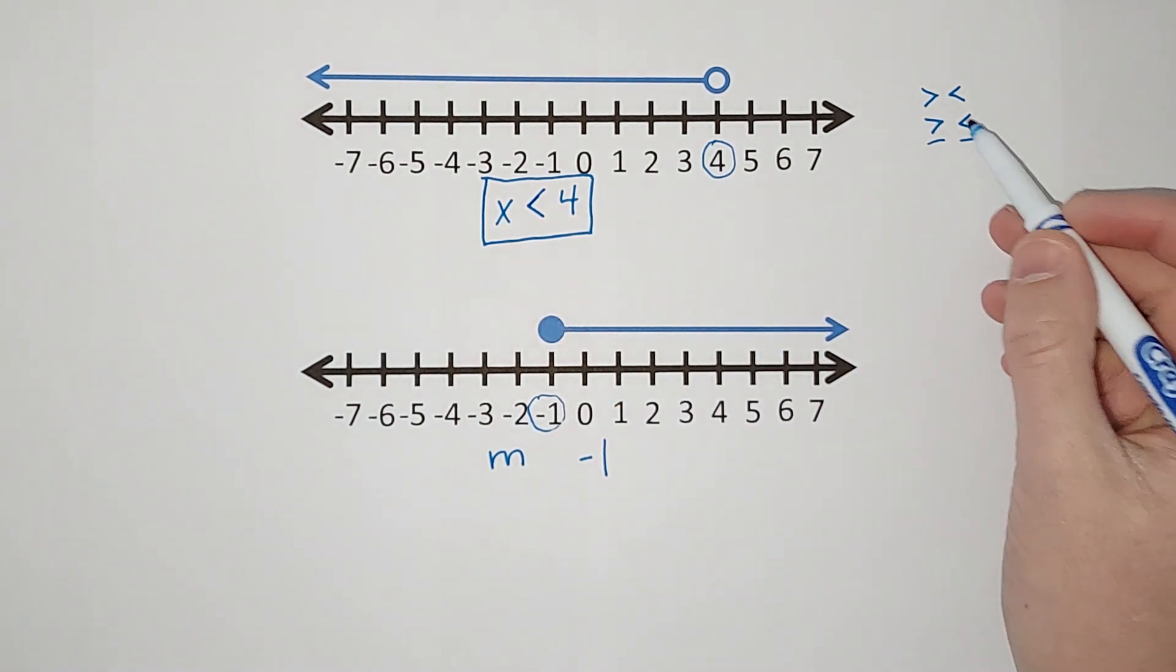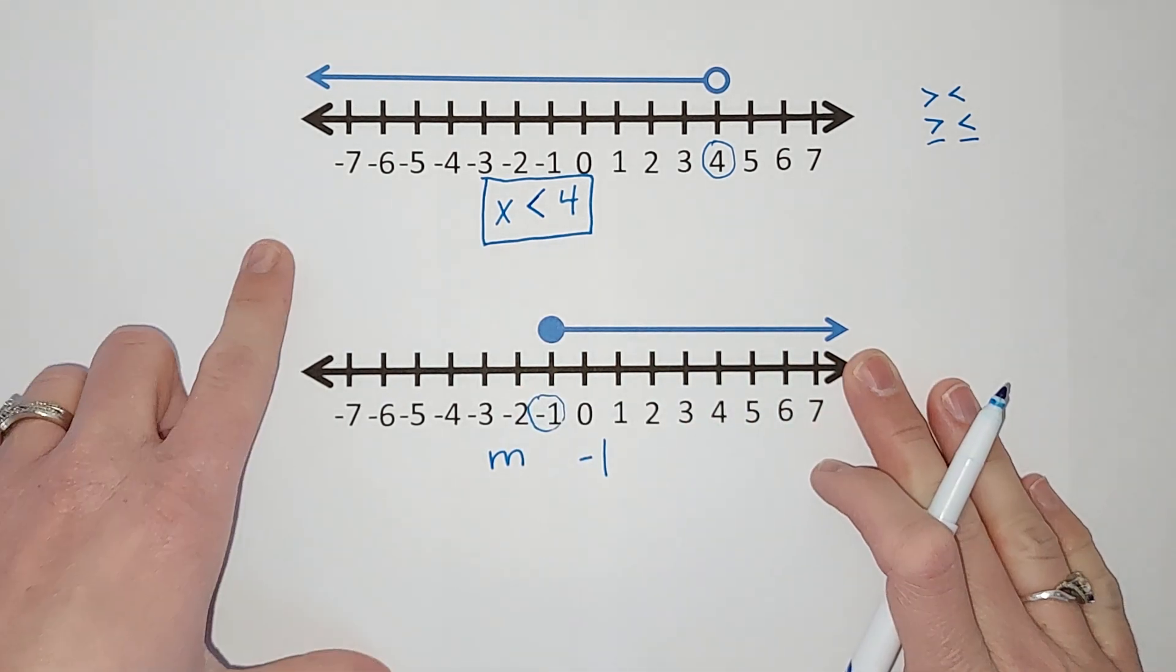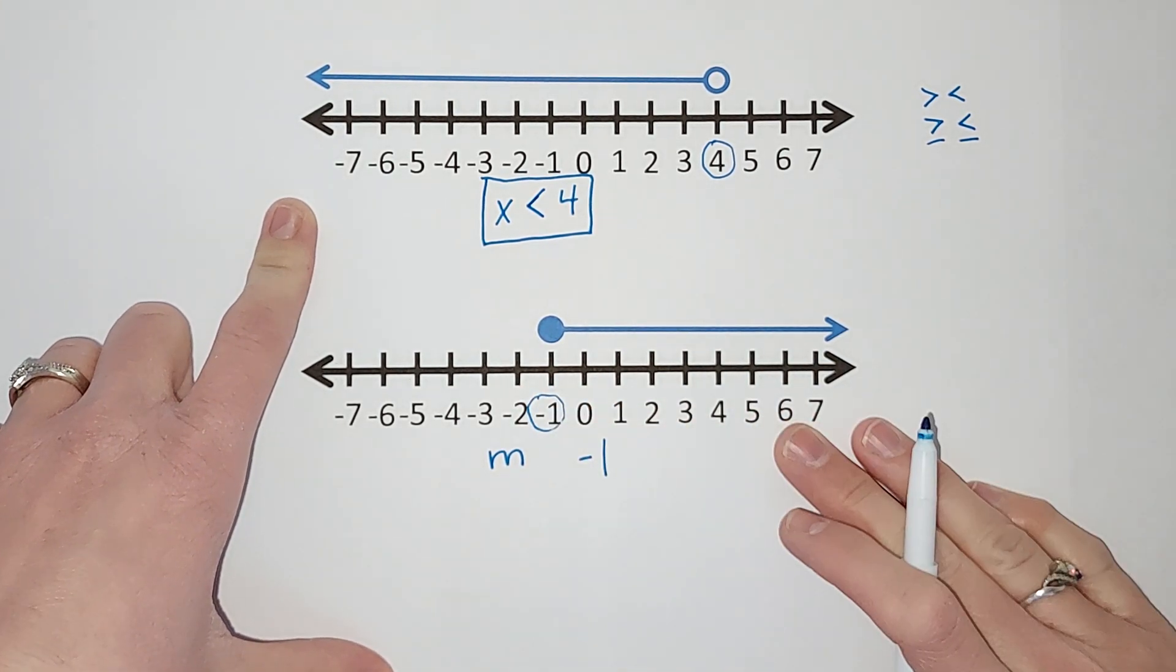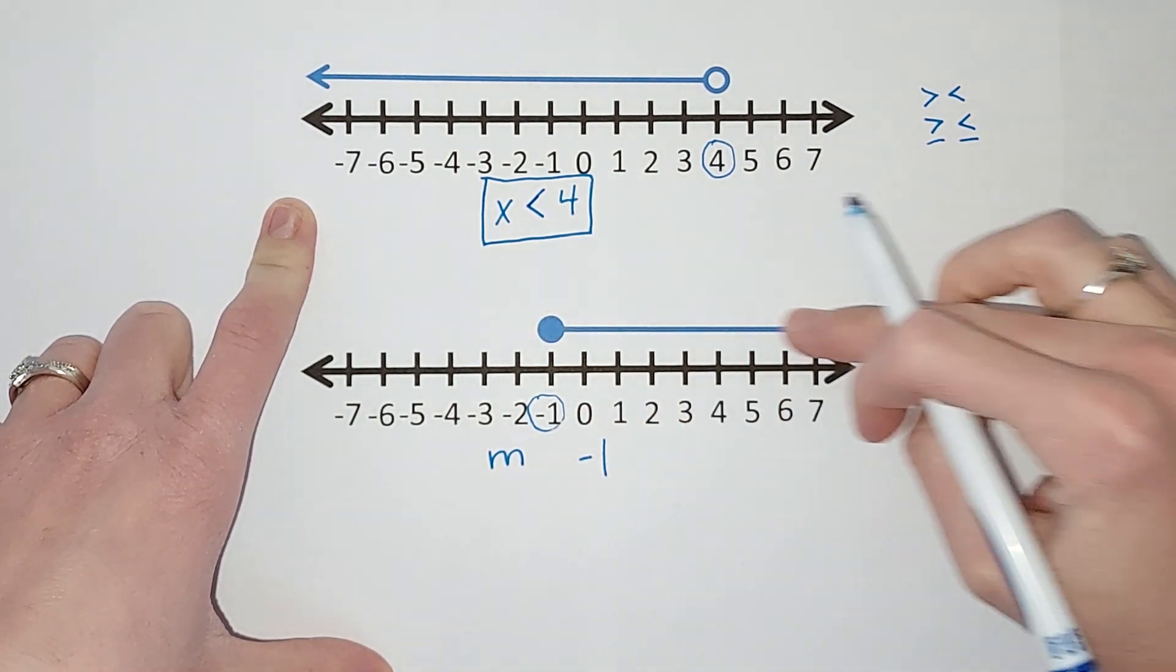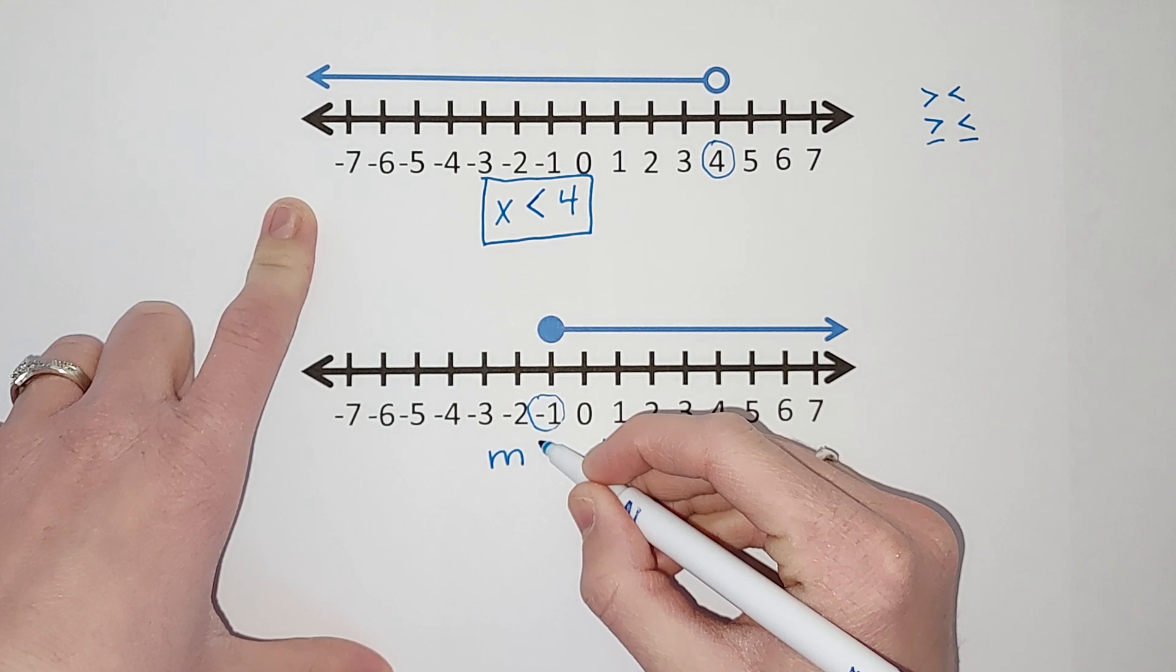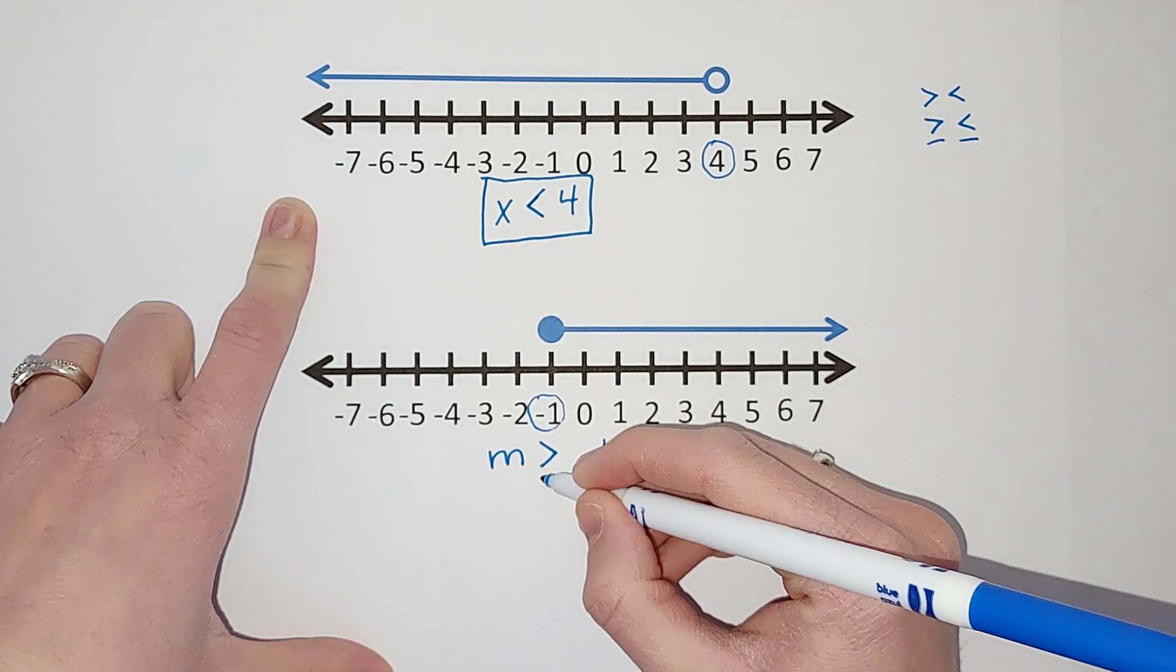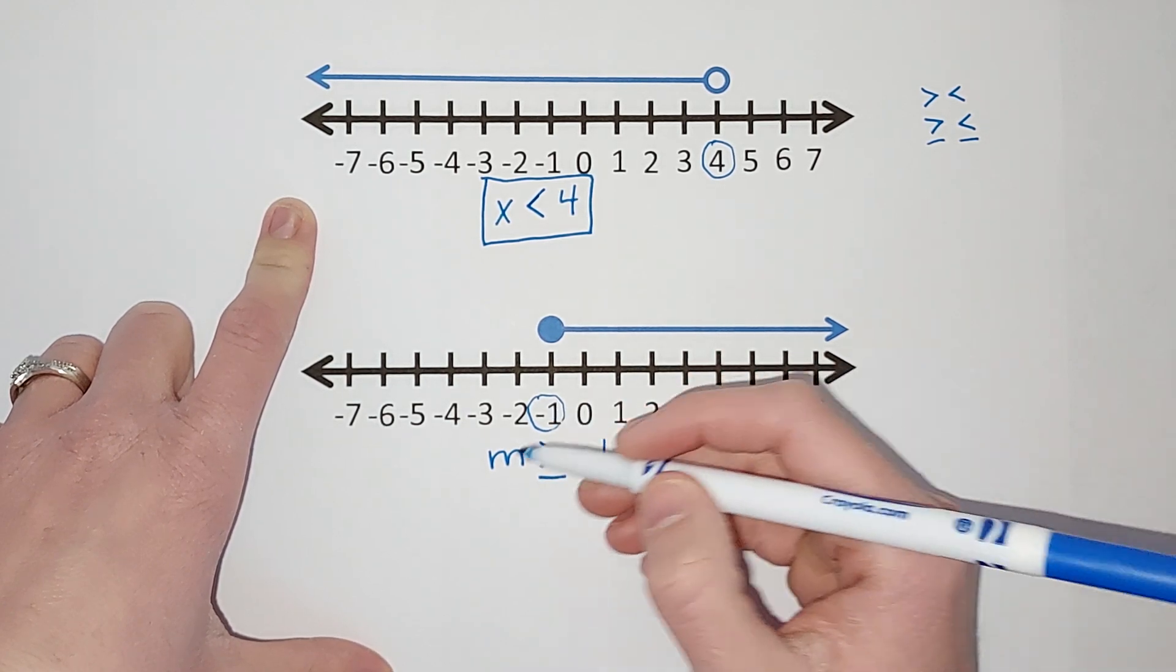So I know it's going to be one of the bottom two. My arrow is going to the right, which is numbers bigger than negative 1. Okay, so this represents what m can be. So m is any number greater than or equal to negative 1.